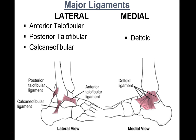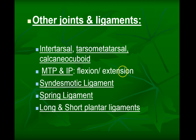Other joints and ligaments to remember include intertarsal joints, tarsal-metatarsal, calcaneal-cuboid joints, metatarsal-phalanges, and interphalangeal joints. The syndesmotic ligament holds the tibia and fibula together — we'll discuss it with high ankle sprains. The spring ligament provides arch support, and the long and short plantar ligaments are on the bottom of the foot. Excessive pronation can stretch these ligament structures.